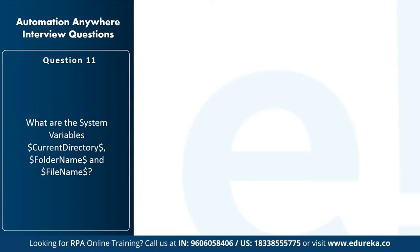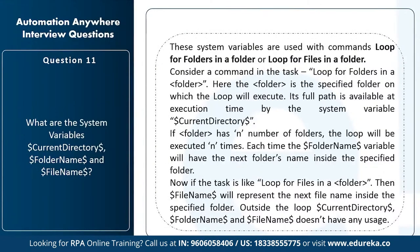The next question is: what do the system variables current directory, folder name, and file name mean? These variables are used with loop commands — 'loop for folders in a folder' or 'loop for files in a folder.' For 'loop for folders in a folder,' the folder is the specified folder to loop over, requiring a full path available at execution time, which you can provide using the current directory variable. The folder name variable holds the next folder's name inside the specified folder each iteration. The file name variable represents the next file name inside the specified folder. Outside these loops these variables have little usage, but inside loops they are very useful when designing large complicated tasks.